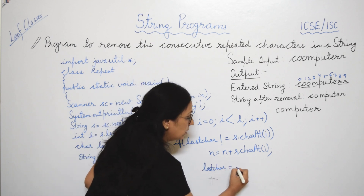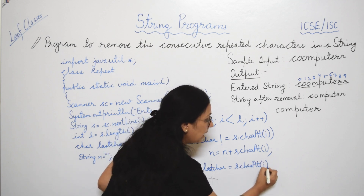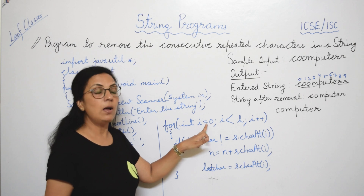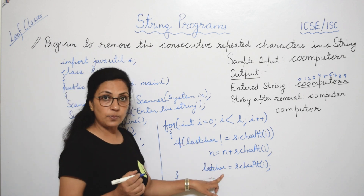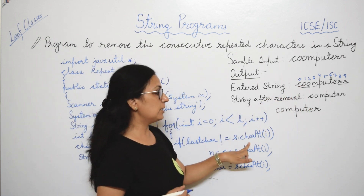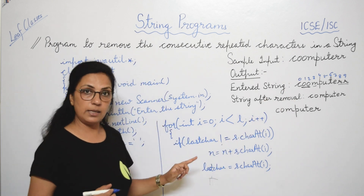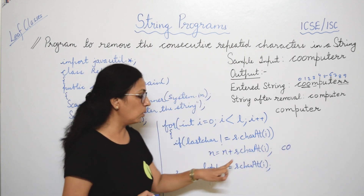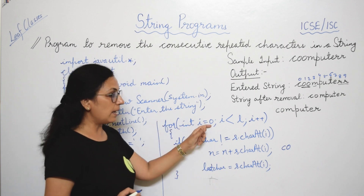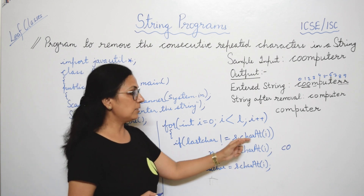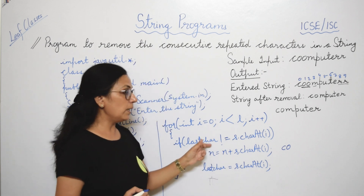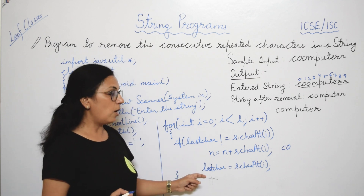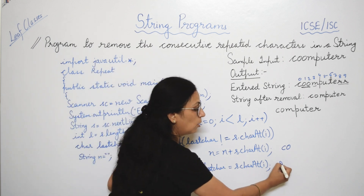Let's trace: lastChar is space, s.charAt(0) is 'c'. Space is not equal to 'c', so n becomes 'c'. Then lastChar = 'c'. Now i=1, lastChar is 'c', s.charAt(1) is 'o'. 'c' is not equal to 'o', so 'o' is added. Now i=2, lastChar is 'o', and s.charAt(2) is also 'o'. 'o' is not equal to 'o' — condition is false, so this statement is not executed.